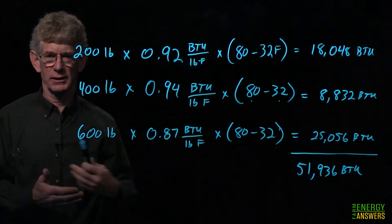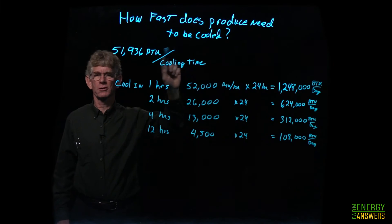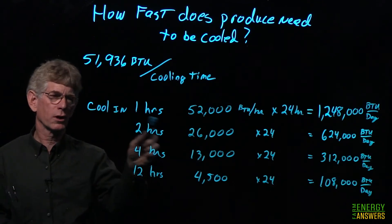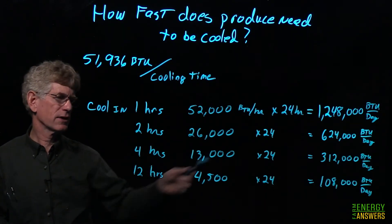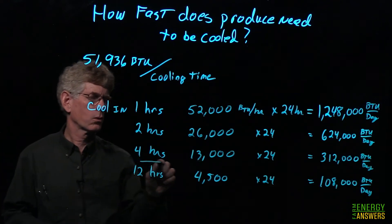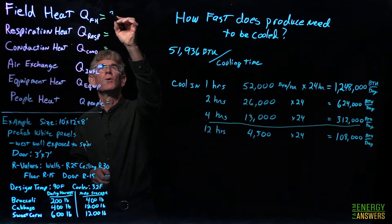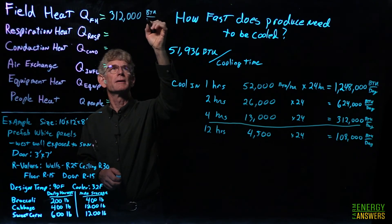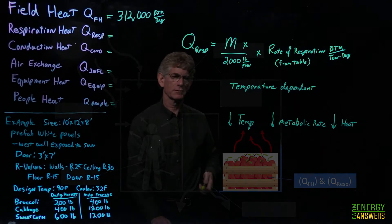Next, we look at how fast we have to remove that heat, because refrigeration is rated in BTUs per hour, not just BTUs. The rate depends on the produce: strawberries spoil quickly so we'd want to cool them in about an hour, while carrots are less sensitive and might allow 12 hours. For our example, we're going to cool in four hours. This gives us our BTUs-per-day figure for field heat.